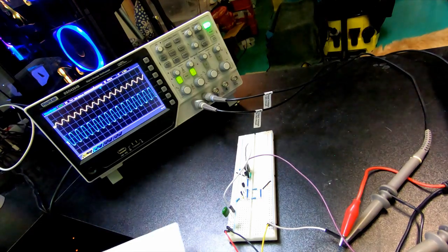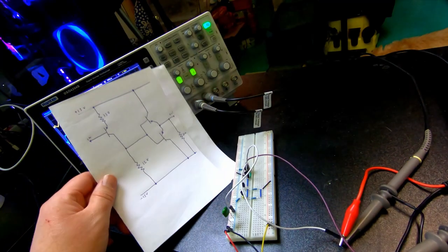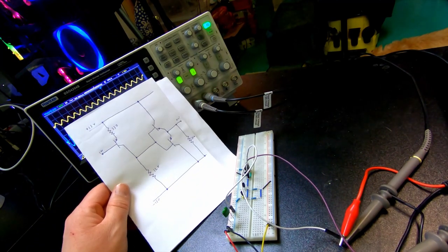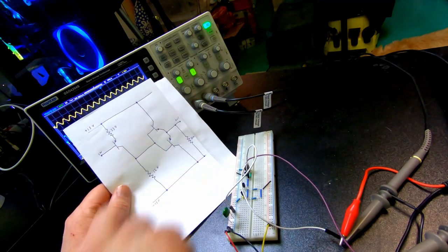So anyway, now we can continue and add the missing parts, which is the common emitter amplifier and the follower.